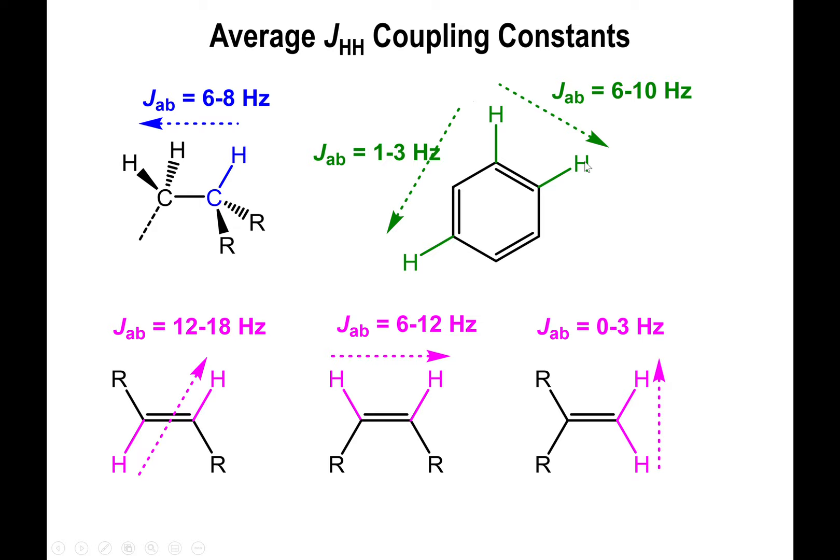Whereas if the hydrogens are two positions away — or three carbons away from each other — then the interaction is lessened down to 1 to 3 Hertz. So you could use that information to tell which hydrogens you're talking about when it comes down to the aromatic molecule.